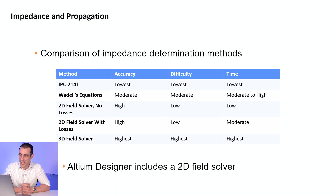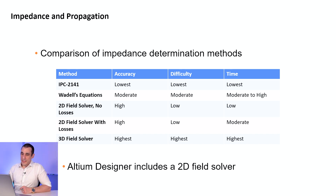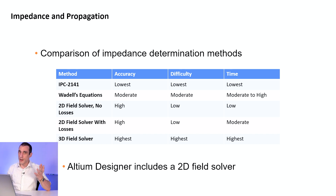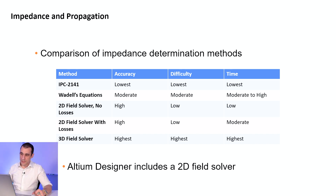There are different methods for impedance calculations used for transmission lines. The simplest method is the IPC 2141 equations. These are the lowest accuracy — there should be an asterisk next to that, because there is a specific situation in which they are low accuracy, which I'll describe in a moment. But they are very easy to use. The equations are very simple — you literally just plug in your values for your trace geometry and you get an answer. Therefore the time required is also lowest.